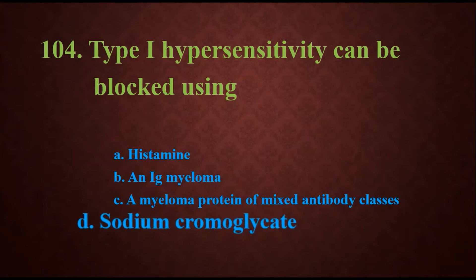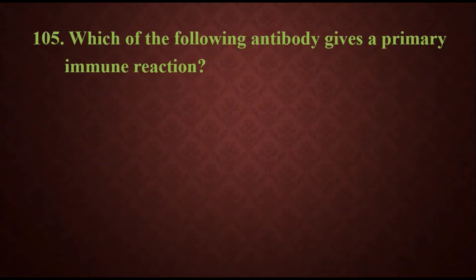Question 105: Which of the following antibodies gives a primary immune reaction? Options are IgG, IgM, IgA, or IgE. The answer is IgM, which is the first antibody that is going to be developed after infection, so that gives the primary immune reaction.